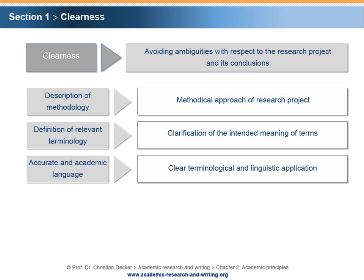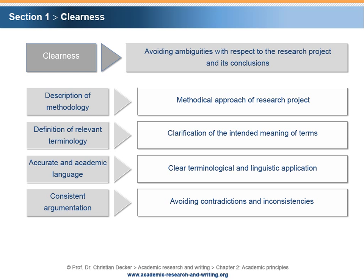Accurate and academic language: a clear terminological and linguistic application enhances the clearness and thereby the comprehensibility of the research output. Consistent argumentation: contradictions and inconsistencies reduce the clearness of the research output.